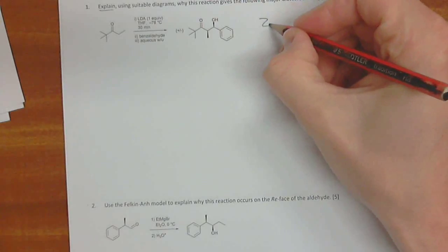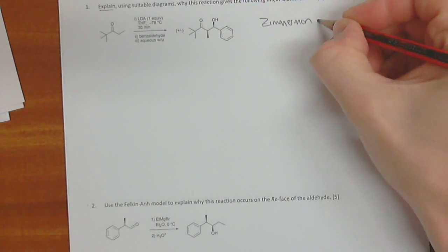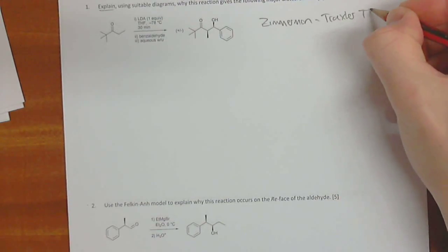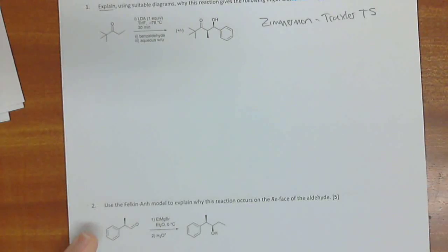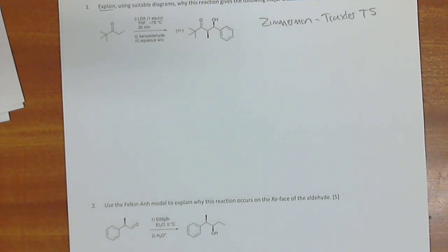So the first thing, of course, is that we're going to be using the Zimmerman-Traxler transition state. Okay, so you need to write that somewhere to let me know that you know what the name of this transition state is called. There's about a half a mark associated with that.